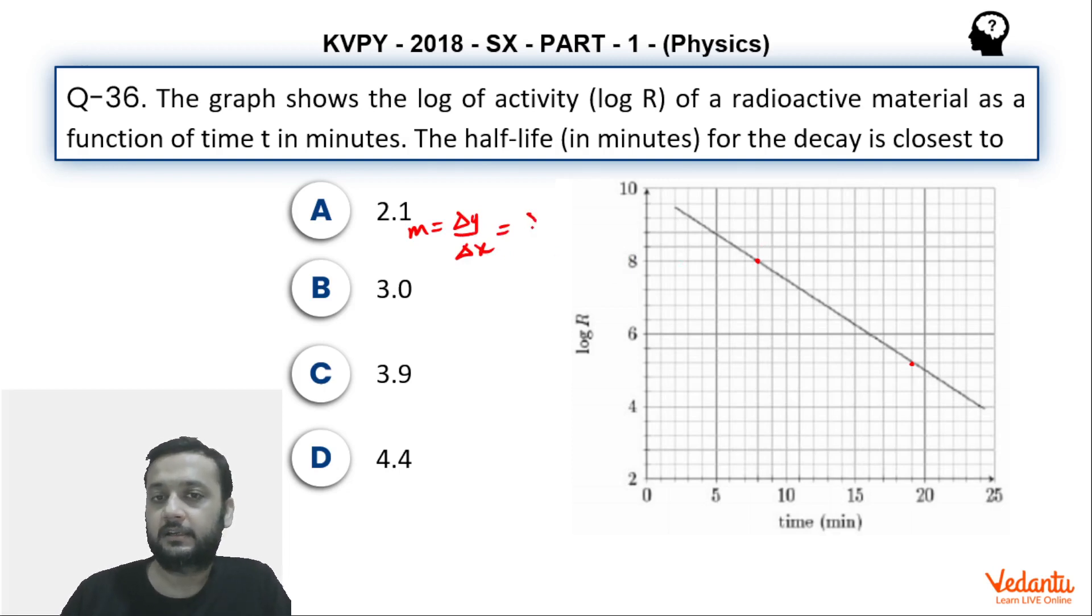So delta y by delta x. So y value of this is 8. Y value of this will be 5.2. Why it will be 5.2? Because if you can see that this gap between 4 and 6 has been divided into 5 equal parts: 1, 2, 3, 4, 5. So basically the gap of 2 corresponds to 5 divisions. So 1 gap will correspond to 0.4. And this is the third gap: first, second, third. So basically 0.4, 0.4, 0.4 means 1.2. So we can say that 4 plus 1.2 is 5.2.